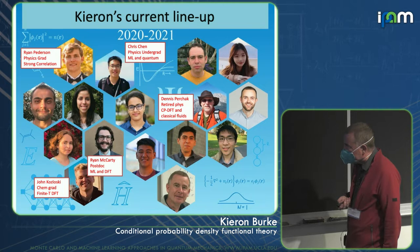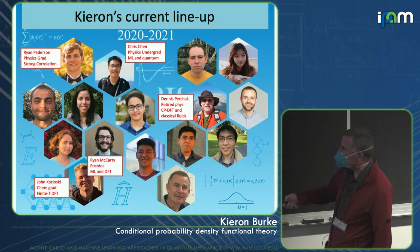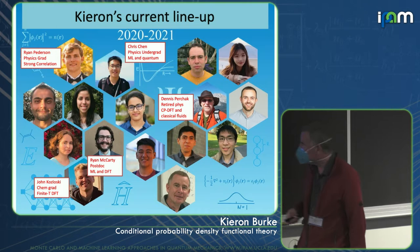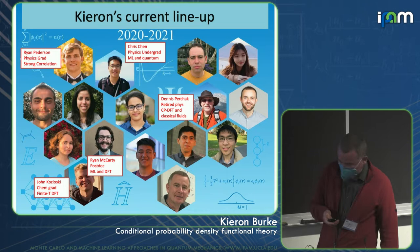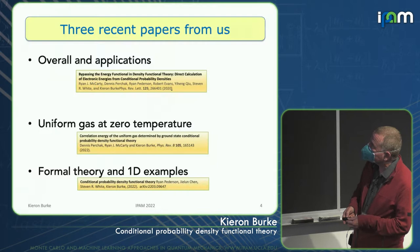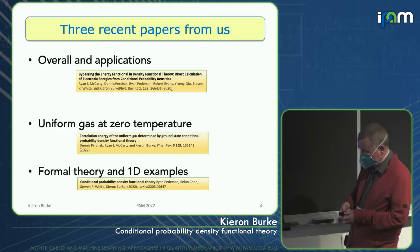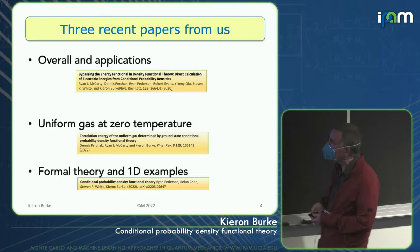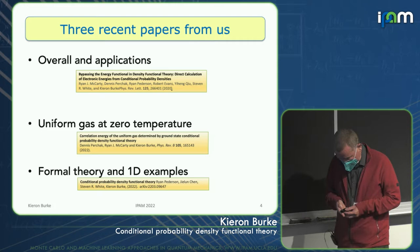Ryan McCarty was a UC presidential postdoc doing this on the side. John Kozlowski is a chemistry graduate student working on the warm dense matter. The main driver is Denis Percek, a retired physicist living in Irvine, who we were trying to get to work on classical fluids but got distracted along the way. The work is based on three recent papers.